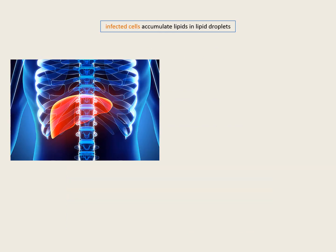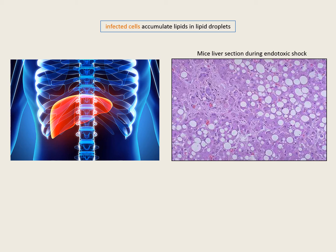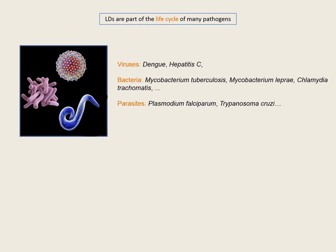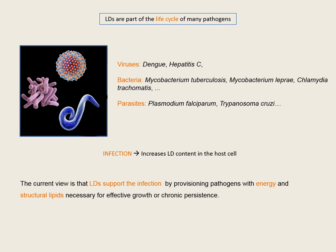One of the most intriguing phenotypes of infected cells is the accumulation of lipid droplets. This is observed during endotoxic shock, where you can see how hepatocytes accumulate lipid droplets. The initial question was: why do lipid droplets accumulate in infected cells? It is known that lipid droplets are part of the life cycle of many pathogens. Different viruses like dengue virus or hepatitis C, different bacteria like mycobacteria or chlamydia, or parasites like plasmodium or trypanosoma target lipid droplets once inside the infected host cell, and the infection activates the biogenesis of lipid droplets in the host cell.